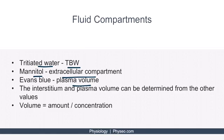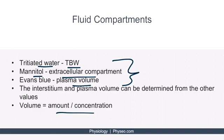The interstitium and plasma volume can be measured indirectly using these other values. For Step 1, it's more important to know that the different compartments can be measured clinically and how to do it. A known mass of one of these substances is injected into a patient depending on the compartment we want to measure. The substance is allowed to equilibrate over several hours. The amount lost in the urine is measured, and then the patient's blood is drawn to measure the concentration of the substance. Using the equation volume equals amount over concentration allows us to determine the volume of the compartment.